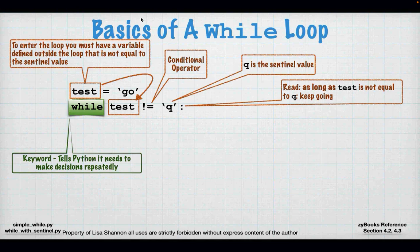I have `test` equal to `go`, and on the while loop I have: while `test` is not equal to the letter Q. The same conditional operators and boolean operators from last week apply. Q is my value and it is my sentinel value. It says: when `test` finally equals Q, then stop. You can read this as: as long as test is not equal to Q, keep going. The only time this loop will stop is when you set `test` to the character Q.